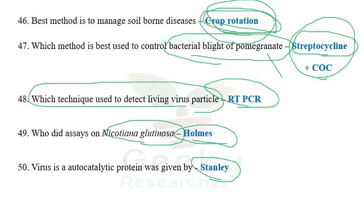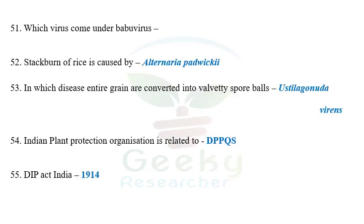The next question: virus is an autocatalytic protein — this was given by W.M. Stanley, the Nobel laureate who received the prize for crystallization of tobacco mosaic virus. He called viruses autocatalytic proteins because viruses have properties of both living and non-living things. When outside the host, it is an inactivated non-living particle; when it finds a host, it activates and starts metabolic processes using the host cell machinery. That is why it is called an autocatalytic protein.